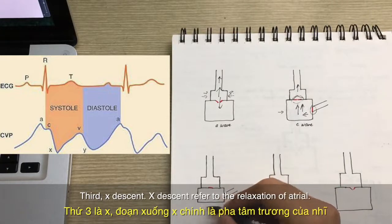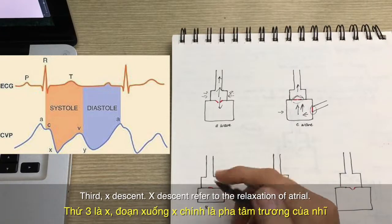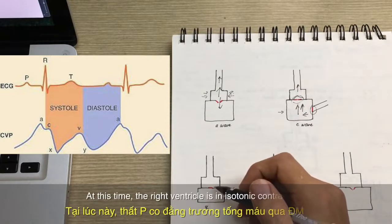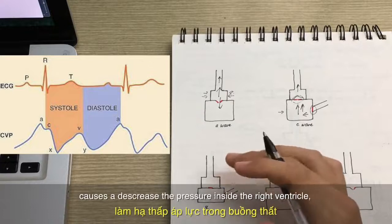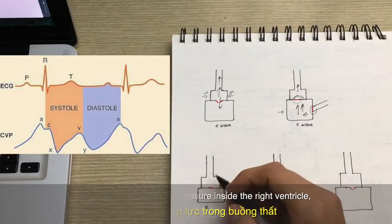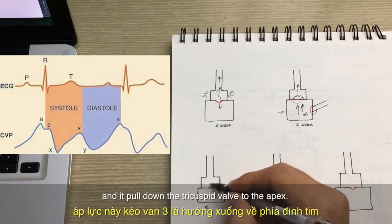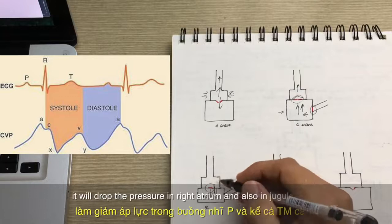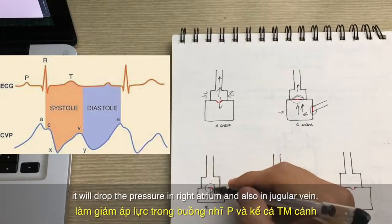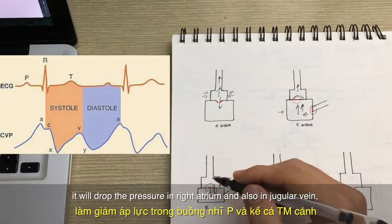So the third is X descent. X descent refers to relaxation of atrial. At this time, the right ventricle is in isotonic contraction. It decreases the pressure inside the right ventricle. It pulls down the tricuspid valve to the apex, and it will drop the pressure in the right atrium and also in the jugular veins. So we have the X descent.